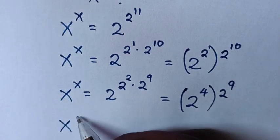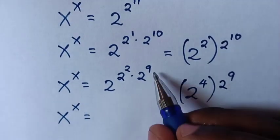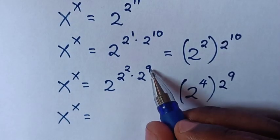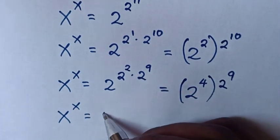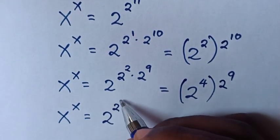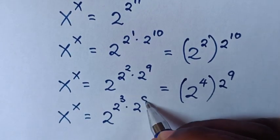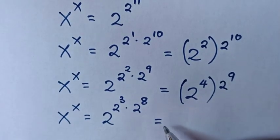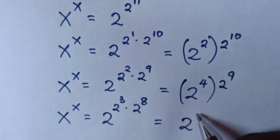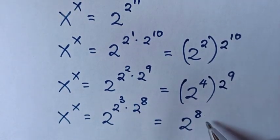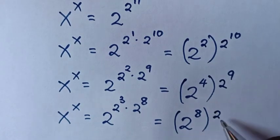Then x^x = 2^9 is decomposed again with the exponent increasing by 1 power. So it becomes 2^(2^2 · 2^3 · 2^8), which equals 2^(2^3) bracket 2^8, and 2^3 is power of 8.